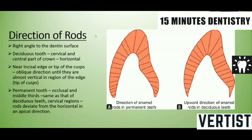The direction of enamel rods differs between deciduous and permanent dentition. Usually enamel rods are at right angles to the dentin surface. In deciduous teeth, in the cervical third and middle third, the enamel rods are horizontal, while in the occlusal third they run obliquely until they are almost vertical in the region of the cusp tip or incisal edge. In permanent teeth, the arrangement is the same in the cuspal and middle occlusal third, but in the cervical third the rods deviate from horizontal in an apical direction.